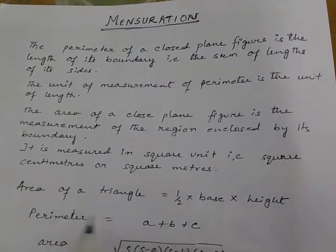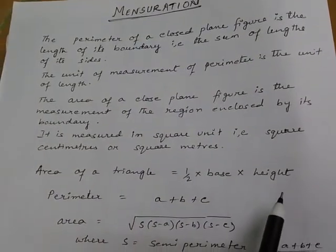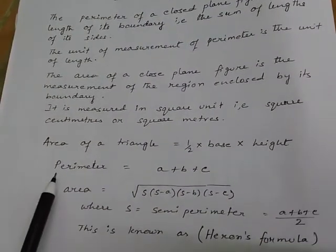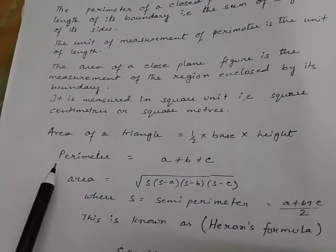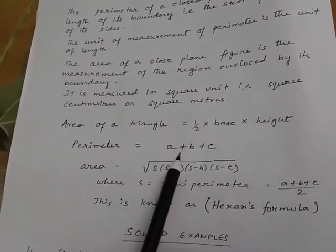Area of a triangle goes like this: half into base into height. We have just learnt perimeter is the length of its boundary. Therefore, perimeter is equal to a plus b plus c.